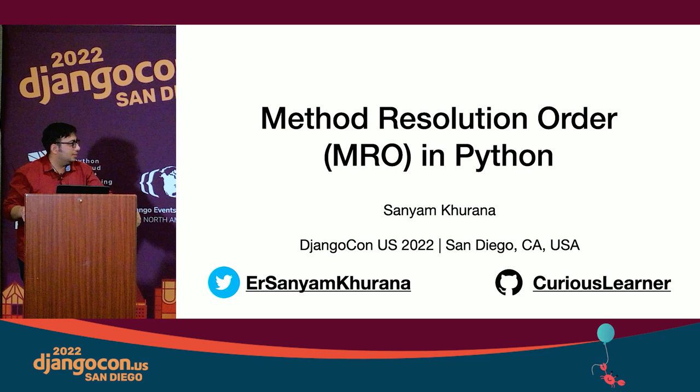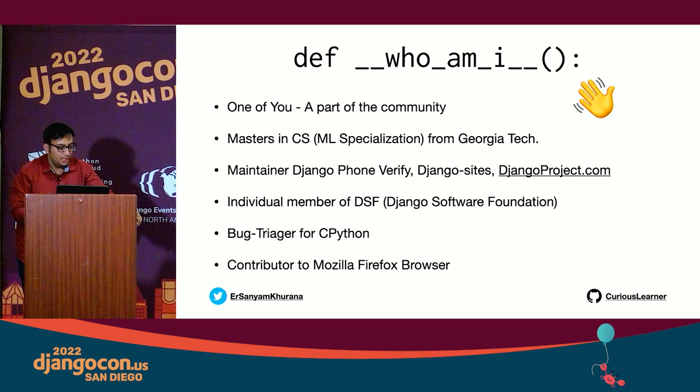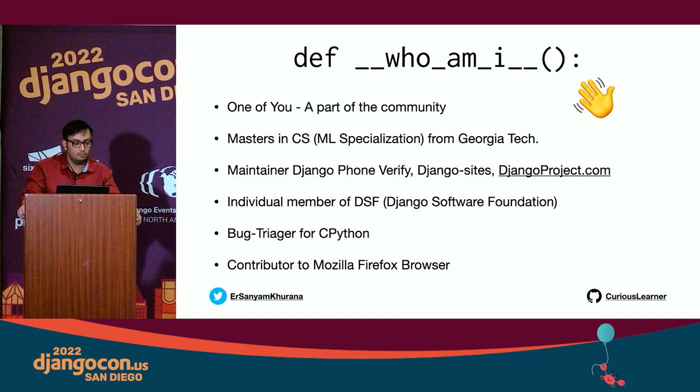A bit about me — I'm one of you, a part of the community. I have a master's degree from Georgia Tech. I maintain a few open source projects including Django Phone Verify, Django Sites, and djangoproject.com. I'm a bug creator for CPython and a contributor to Mozilla. You can reach me on Twitter at ercimkarana or GitHub at Curious Learner.